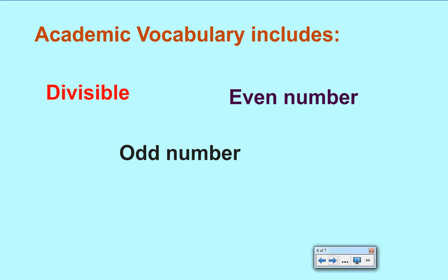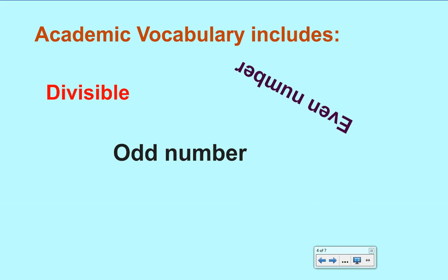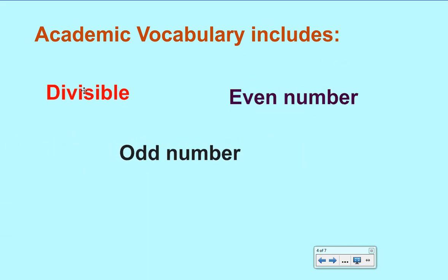First we need to examine some academic vocabulary terms like divisible, even number, and odd number. What does it mean if a number is divisible by another number? If a number is divisible, then it can be divided evenly by another number. An example would be 12 divided by 4. The answer is exactly 3 and there is no remainder. Therefore, 12 is divisible by 4.